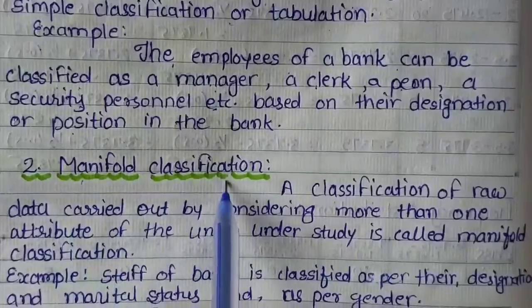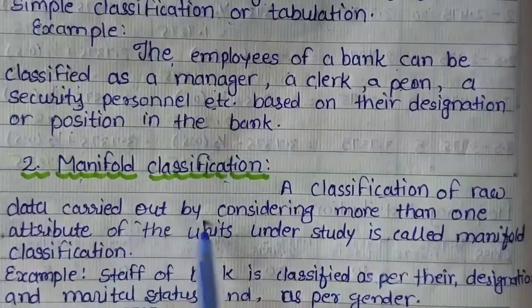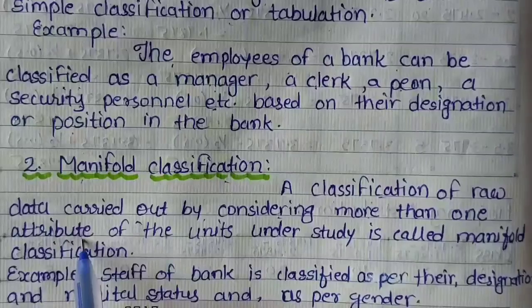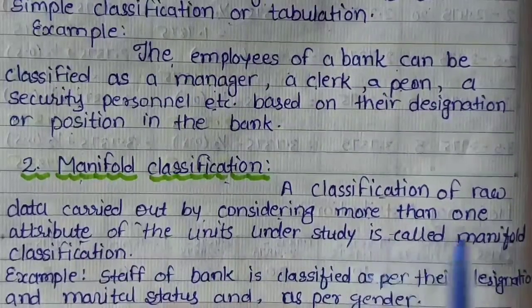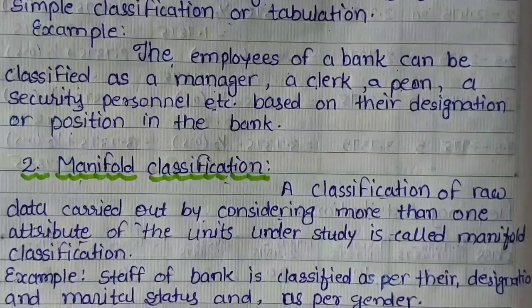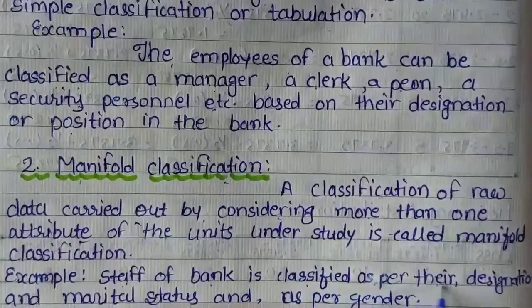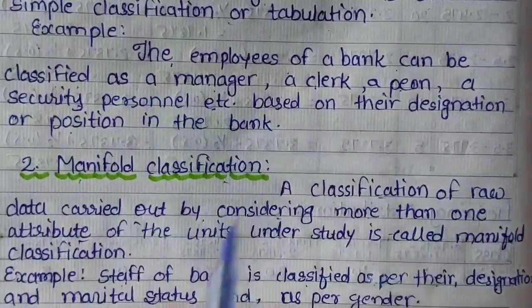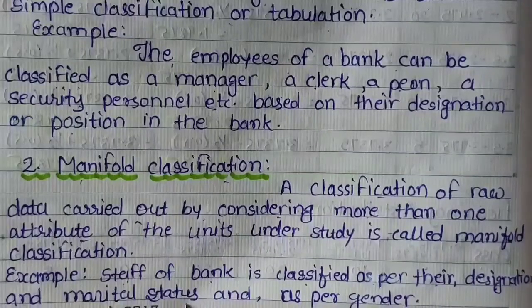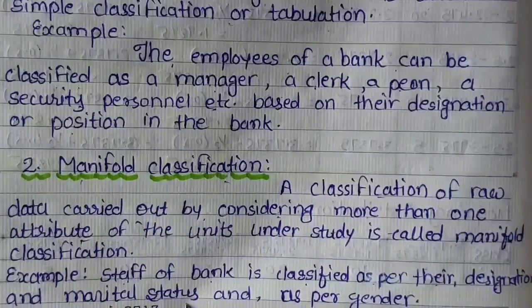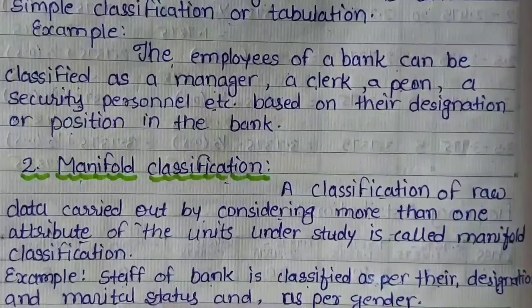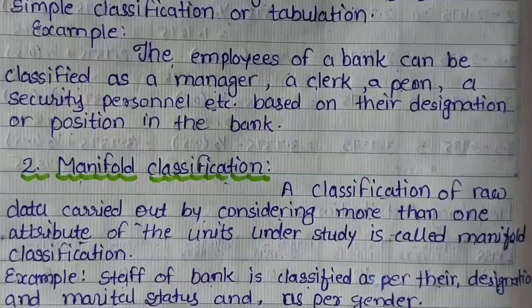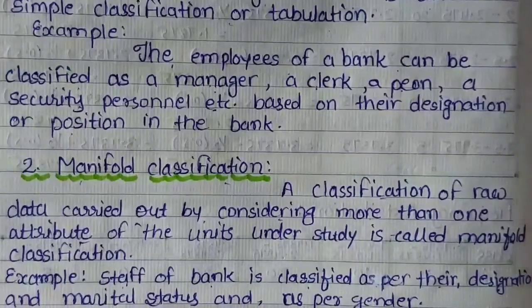Now we will understand manifold classification. Classification of raw data carried out by considering more than one attribute — यानि जिसमें classification का attribute एक से ज्यादा हो — of the units under study is called manifold classification. वही bank staff का example लेंगे. Staff of bank classified as per their designation, and marital status — वो married है या unmarried है — और as per their gender, यानि male या female. तो जब इन सारे attributes को एक साथ apply करना हो, तो ऐसे classification को हम manifold classification कहते हैं.